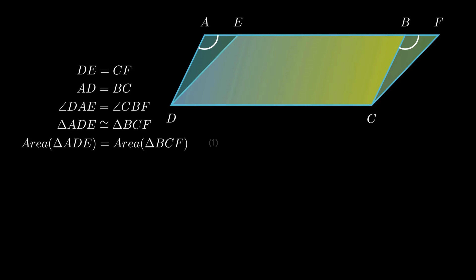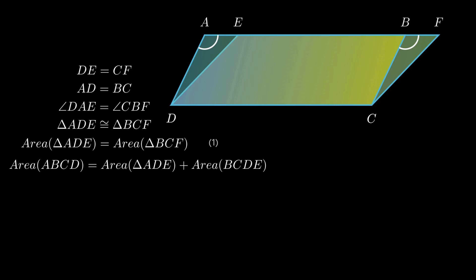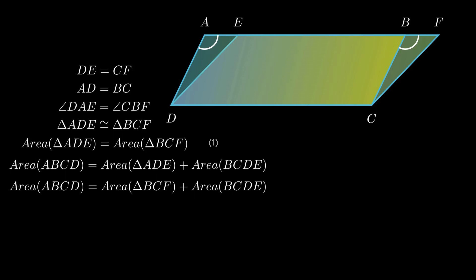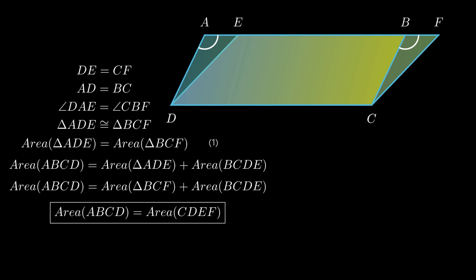Since areas of congruent triangles are equal, area of triangle ADE equals area of triangle BCF. From the figure, area of parallelogram ABCD equals the sum of area of triangle ADE and area of quadrilateral BCDE. Substituting, this becomes area of triangle BCF plus area of quadrilateral BCDE, which forms the area of parallelogram CDEF. Hence, area of parallelogram ABCD equals area of parallelogram CDEF, and the theorem is proved.